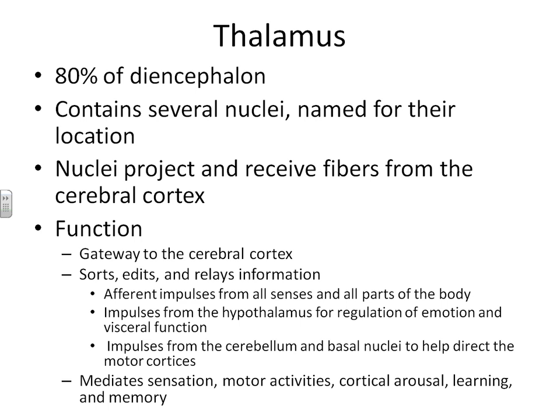Things you are hearing need to go into the temporal lobe. Things you are seeing right now need to go to the occipital lobe. If you are sitting down, you have somatosensory receptors being activated — that information the thalamus must send to the different portions of your somatosensory cortex. The thalamus decides where everything goes in both directions. It also decides what information from the hypothalamus, regarding emotion and visceral functions such as the need to urinate or hunger, gets relayed on to the cerebrum.